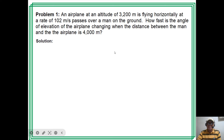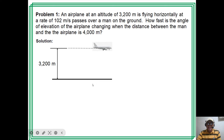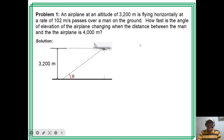So we have here a time rate problem in differential calculus. The first step is to draw the figure. We have an airplane flying horizontally at an altitude of 3,200 meters, observed by a man on the ground. The airplane passes over the man, and for any given time t, we have the angle of elevation of the airplane as observed from the man. We have the horizontal distance from the man to the airplane, which is changing or variable.